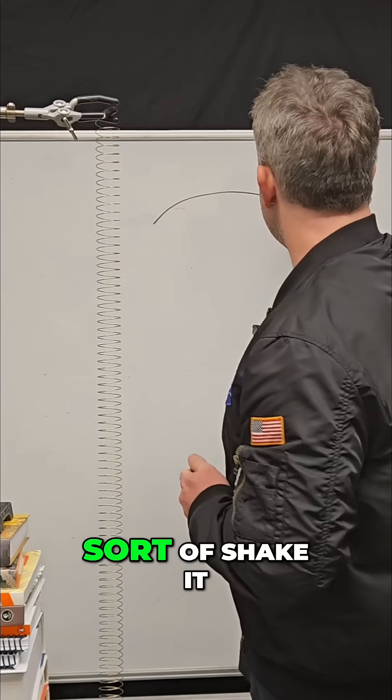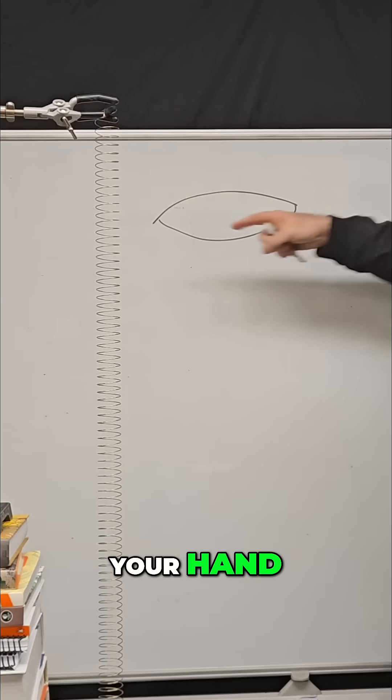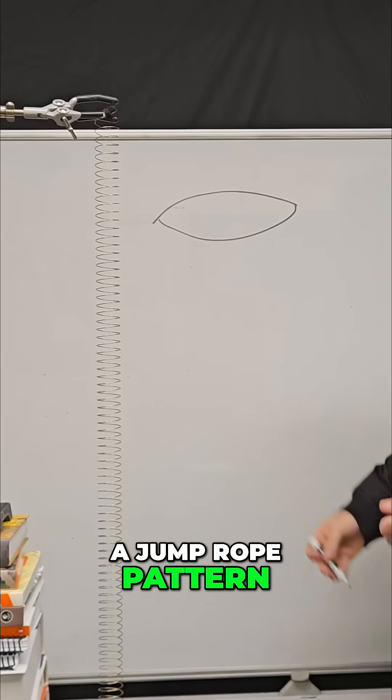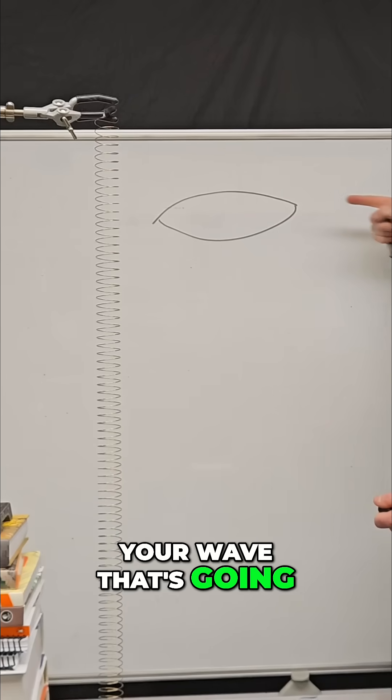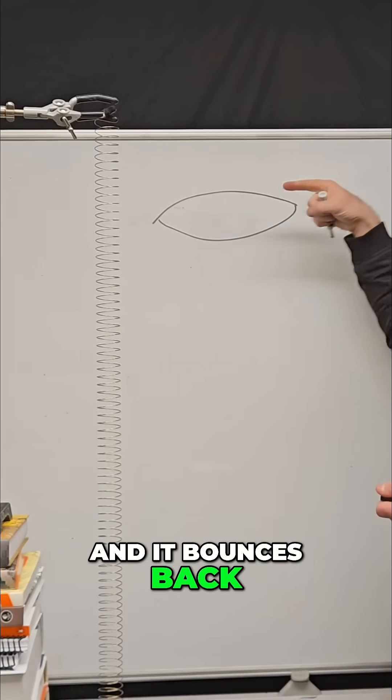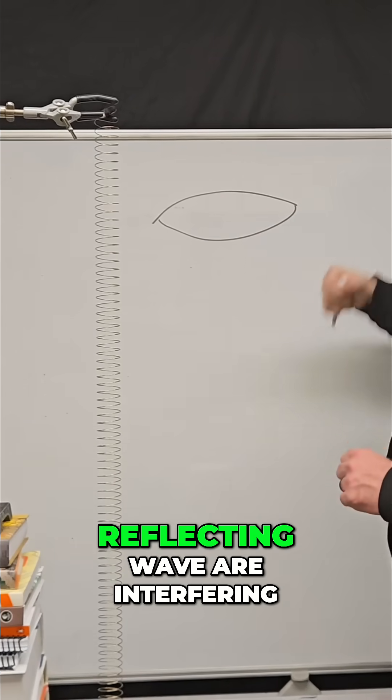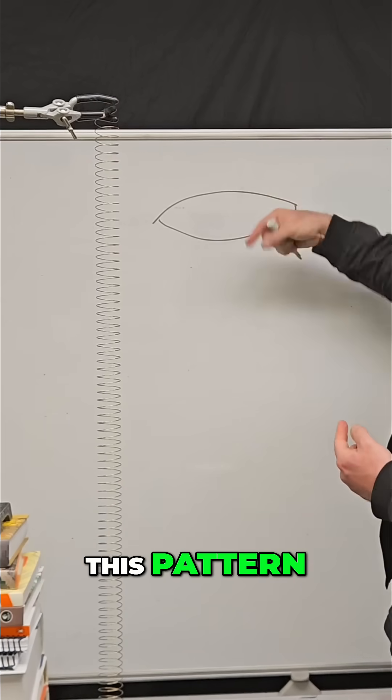if you were to take that rope and shake it up and down with your hand, you would get like a jump rope pattern. So you've got your wave that's going this way, it hits the wall and it bounces back, and that incoming and reflecting wave are interfering with each other and creating this pattern.